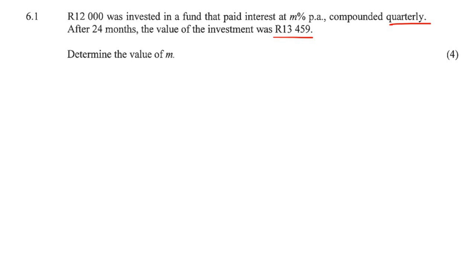They are also going to test you on grade 11 work. So it says 12,000 Rand was invested and that was it. They didn't say 12,000 Rand was invested every single month. They didn't say 12,000 Rand was invested every single year. No, they just invested 12,000 Rand once. So we're only going to use the normal compound interest formula from grade 11.